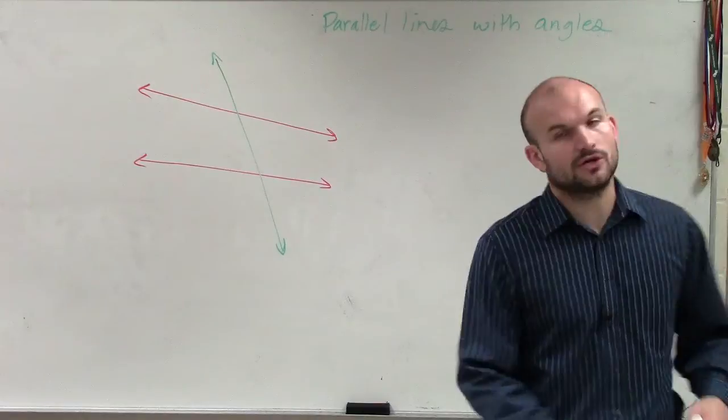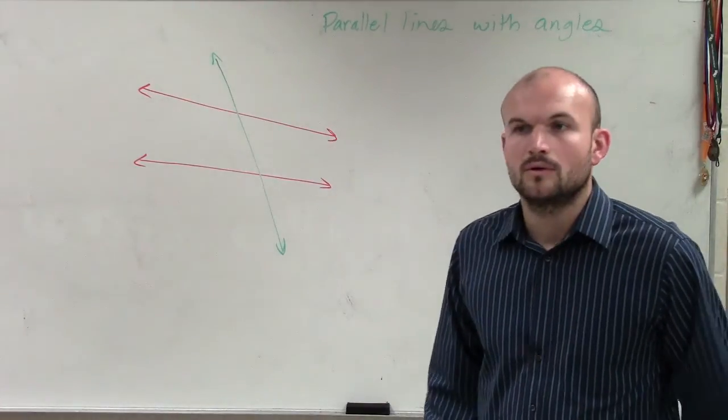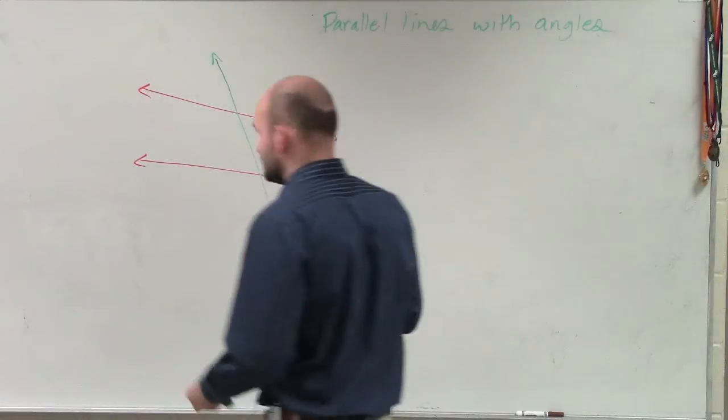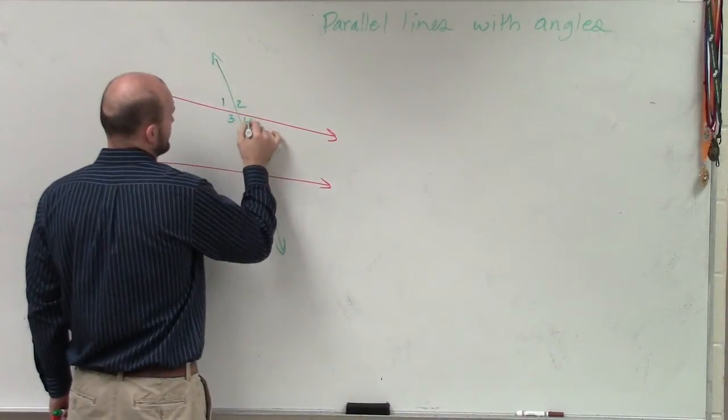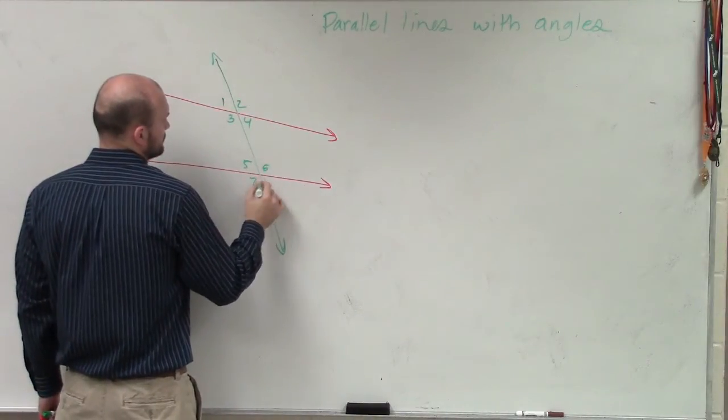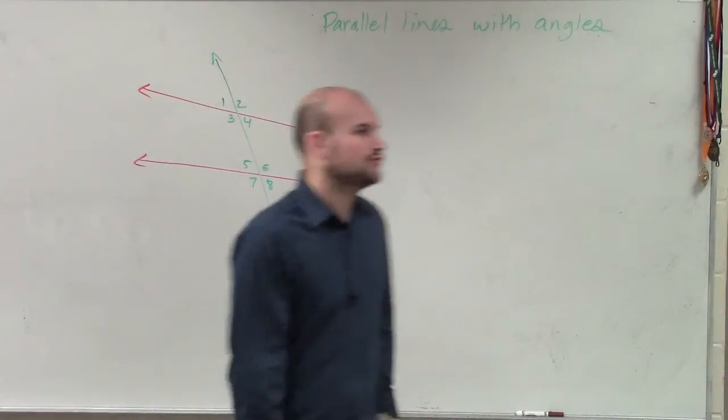So we had two lines and a transversal. What happened was some angles were created.